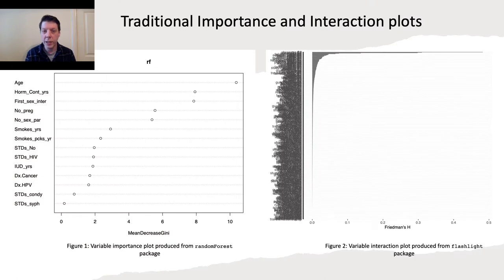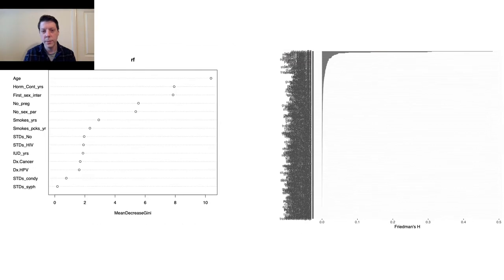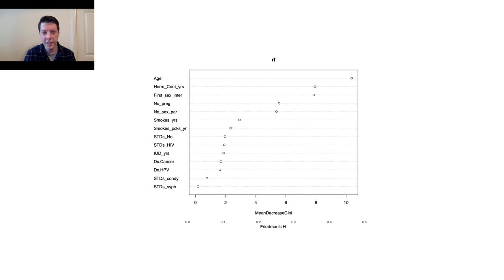To begin, we'll take a quick look at traditional importance and interaction plots. On the left we have a traditional importance plot, and on the right we have every two-way interaction plotted. As you can see, if the number of variables gets very large, plotting every two-way interaction can become complex and difficult to read. Our job was to combine these traditional plots into something more sensible.